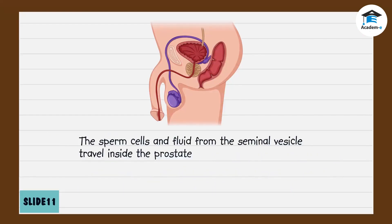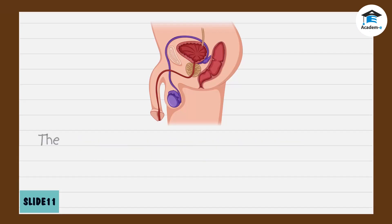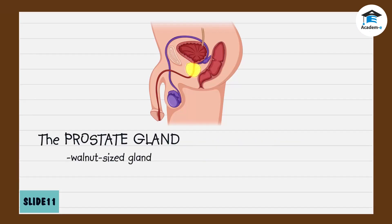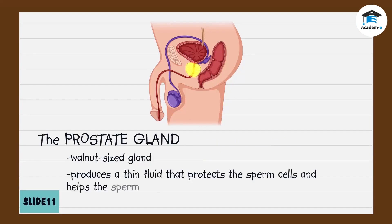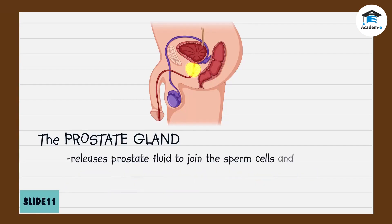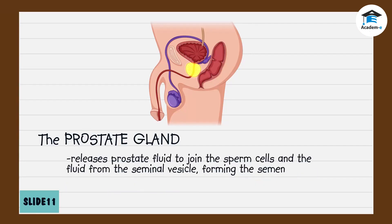Along the ejaculatory duct, the sperm cells and fluid from the seminal vesicle travel inside the prostate gland. The prostate gland is a walnut-sized gland that produces a thin fluid that protects the sperm cells and helps them move. It releases prostate fluid to join the sperm cells and the fluid from the seminal vesicle to form the semen.